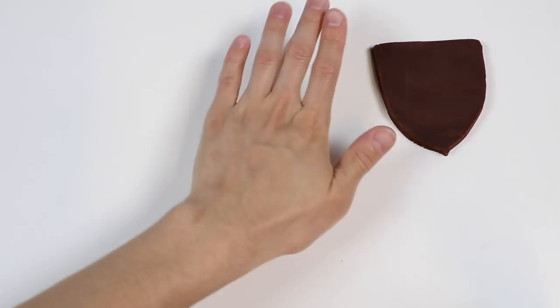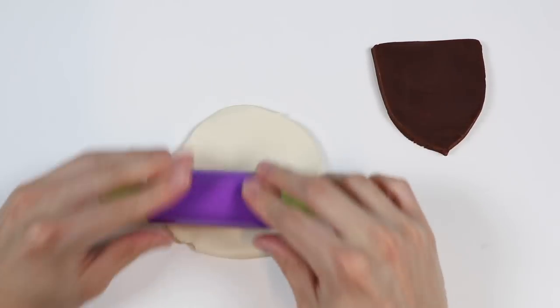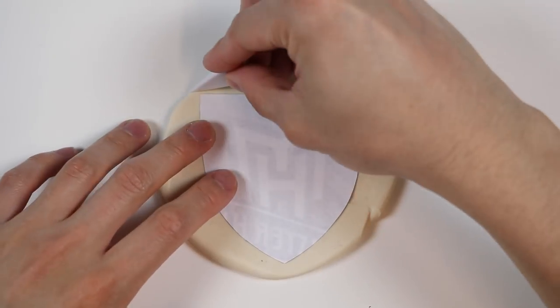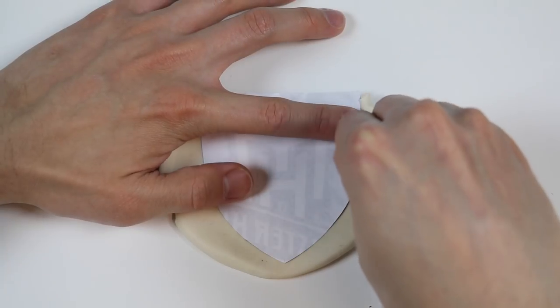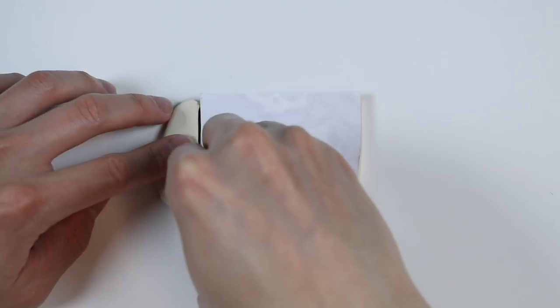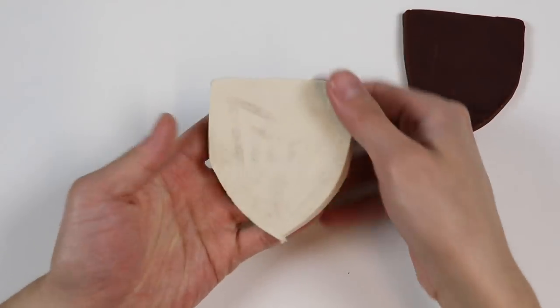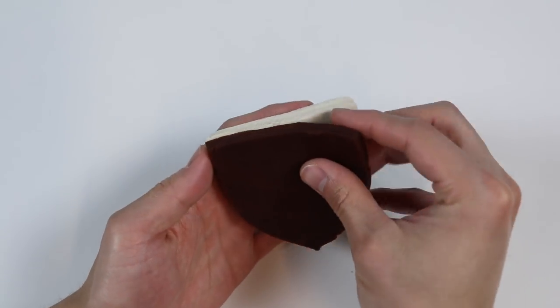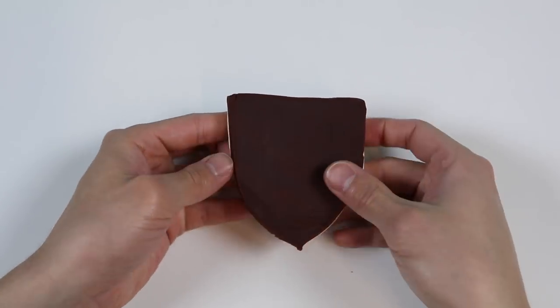Perfect! Now let's roll out some white Play-Doh. Cut out the same shape as before. Awesome! Now let's stack the brown shape on top of the white. Make sure it's all lined up and let's move on to our next step.